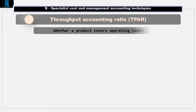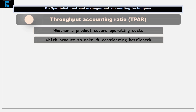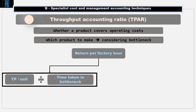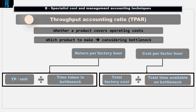The throughput accounting ratio can help us to determine whether a particular product covers operating costs and therefore makes a profit, or if it does not cover the operating costs and therefore makes a loss. We can then use this information to determine which product or products should be made given the bottleneck. There are two other ratios to calculate before we can calculate the throughput accounting ratio, or TPAR. The first is throughput per unit divided by the time taken in the bottleneck resource, giving the return per factory hour. The second is the total factory cost divided by the total time available on the bottleneck resource, giving the cost per factory hour. The TPAR is then calculated as return per factory hour divided by cost per factory hour.